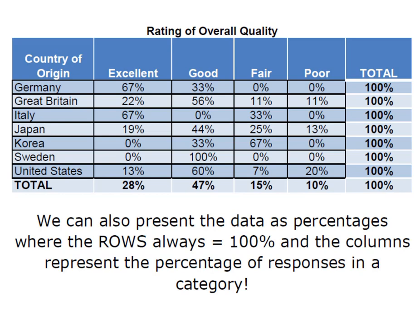We can also represent the data in a cross tabulation table as percentages. The key to a percentage cross tabulation table is that the row percentages will always add up to 100%. So this represents 100% of the Germany ratings, 100% of Great Britain, and 100% of Italy.